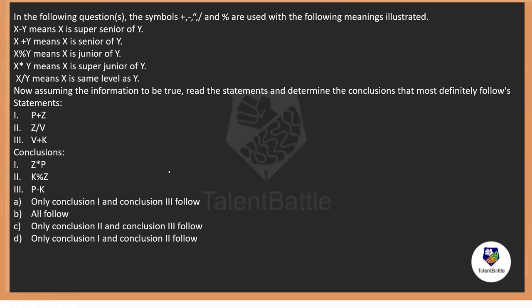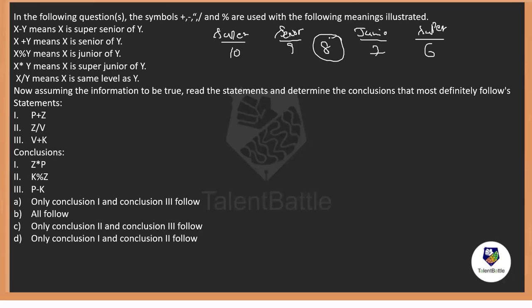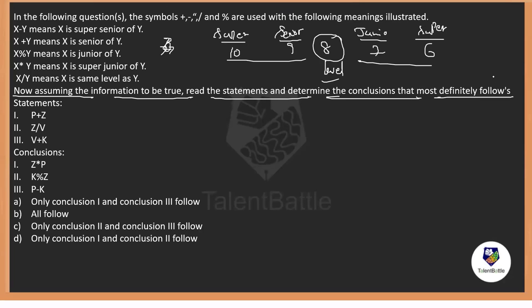To solve easily, I'll assign numeric values. Let 8 be the base. Senior = 9, super senior = 10, junior = 7, super junior = 6, same level = 8. Using these numbers instead of relational terms makes it easier to verify the conclusions.